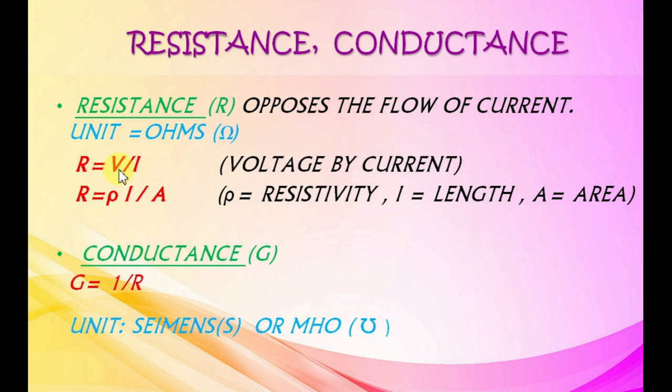Resistance R opposes the flow of current. Unit is ohm. Resistance equals voltage by current. Also R equals rho times L by A, where rho is resistivity depending on nature of material, L is the length, and A is the area.